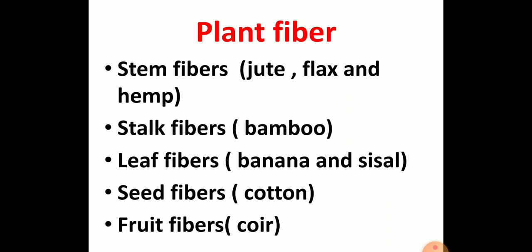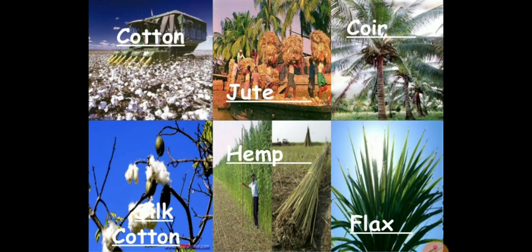Coir is a natural fiber extracted from the husk of the coconut. It is the fibrous material between the hard internal shell and the outer coat of a coconut, and it is used for making different articles like rope, fishing nets, strings, etc. You can see different types of plant fiber in this picture, like cotton, jute, coir, hemp and flax.